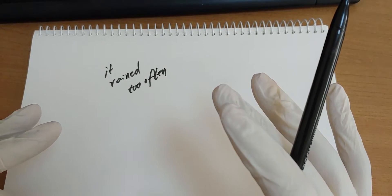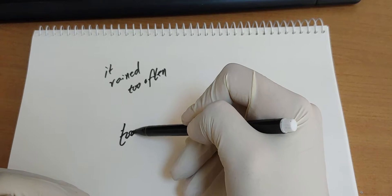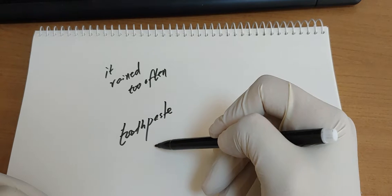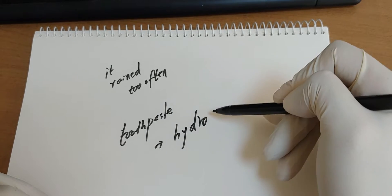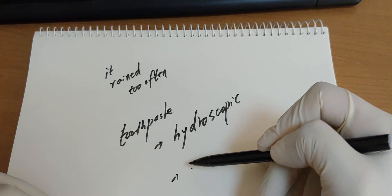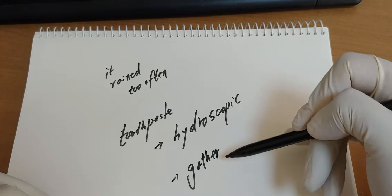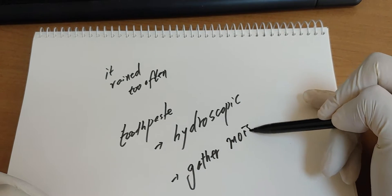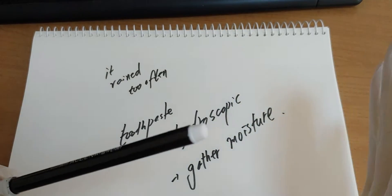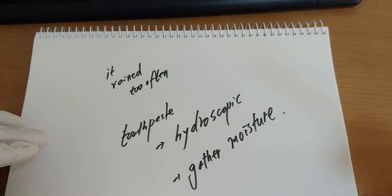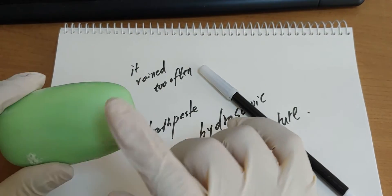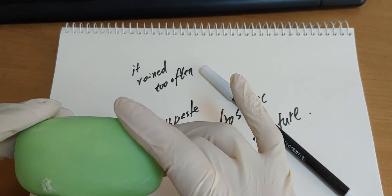So as you know, toothpaste is hydroscopic. It means it gathers moisture, so it was very hard to make a solid state battery. So I mixed one more material.